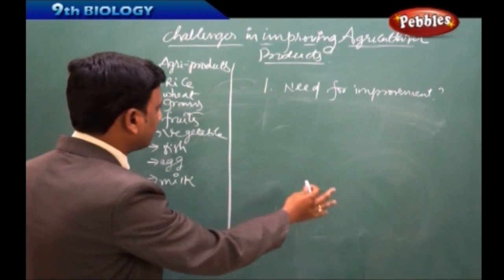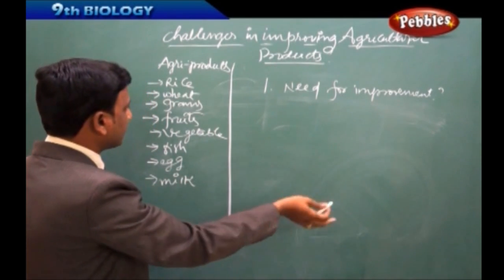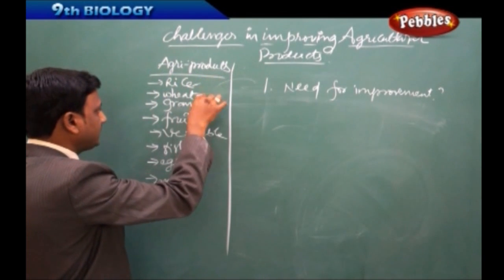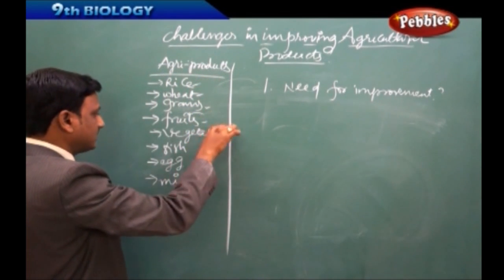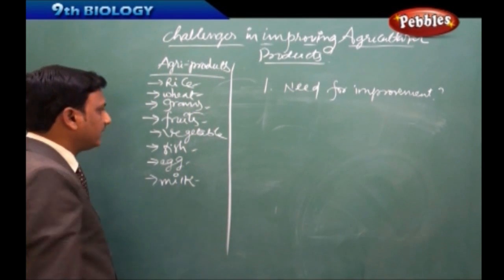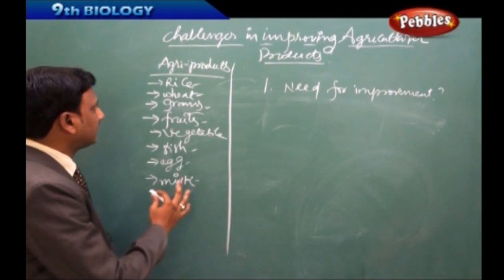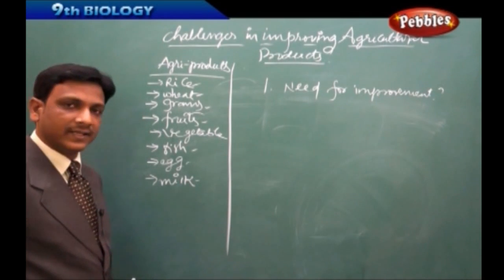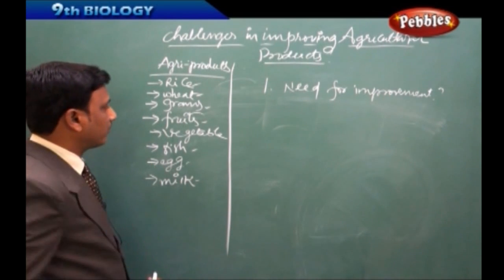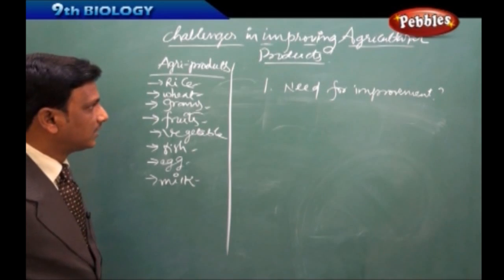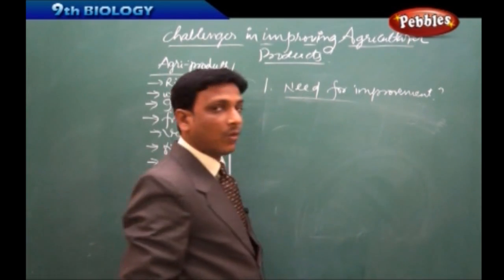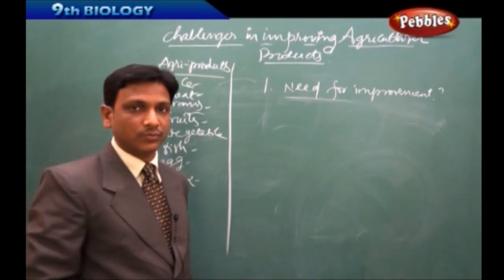I have written the agricultural products here: rice, wheat, gram, fruits, vegetables, fish, eggs, milk, leafy vegetables, and many other things. These are the main agricultural products noted down. Now let us see our first question — what is the need for improvement, and what is to be improved?